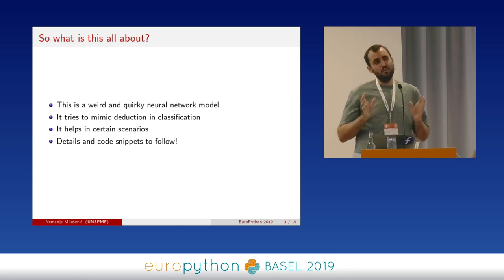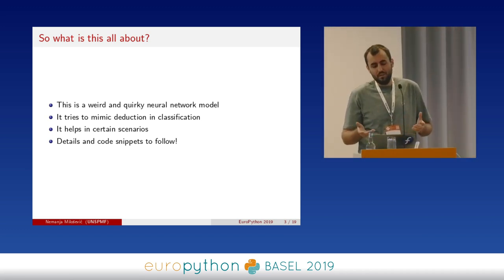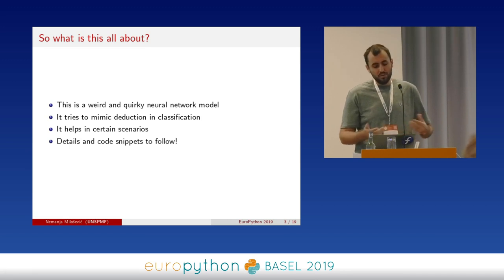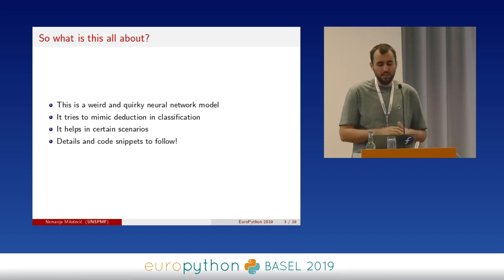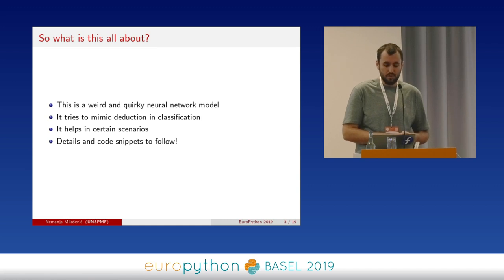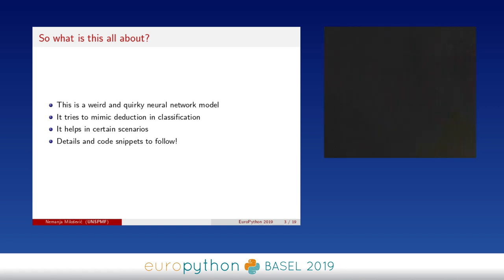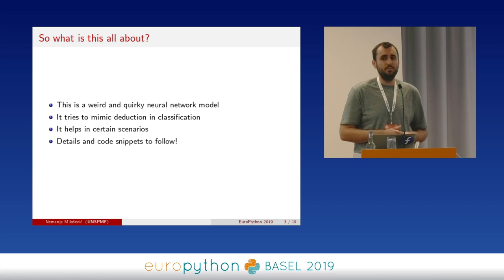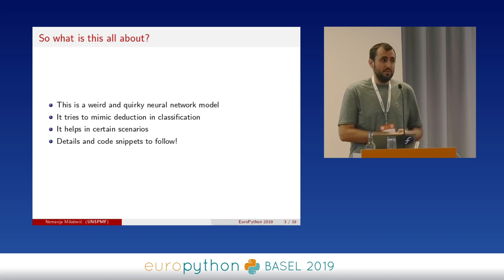This presentation is going to be about a very weird and, let's say, unreasonably working neural network model — I cannot explain the exact reason why it works. It has to do with classification based on missing features. We will talk about image classification in general, but it can be used in any convolutional model. What it tries to do is mimic something we all do every day, which is deduction — something other neural network models still don't know how to do. If you know what all the possible values are and you know what something isn't, you can deduce what it is. It helps in certain scenarios.